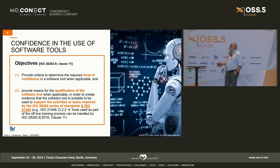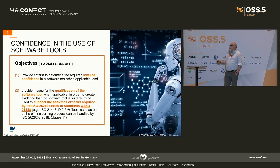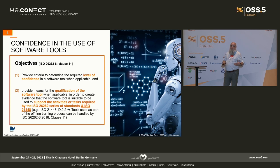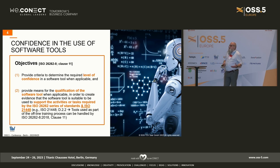In ISO 21448, for example in Annex D, we have a requirement: tools used as part of the offline training process can be handled by ISO 26262 Part 8, Clause 11. The SOTIF standard is not requiring it as a mandatory aspect, but this is a general problem — the SOTIF standard is very high level. But of course, what is good for ISO 26262 when safeguarding functional safety activities, I can use the same tools or methods to safeguard my SOTIF-related activities.